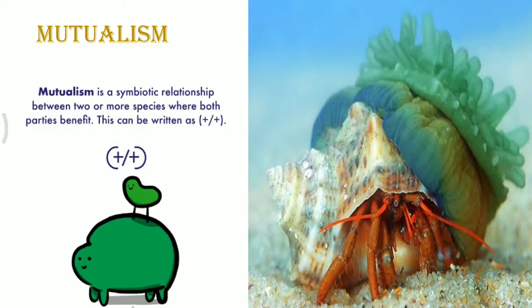Now we will discuss mutualism in detail. The first term is symbiotic relationship. Symbiosis means to live together. Two organisms capable of staying together in a mutualistic relationship are known as mutualists, and the kind of interaction they have is known as mutualism. Here, two species interact in a way that gives benefit to both organisms involved in this partnership.